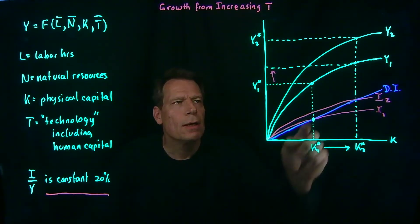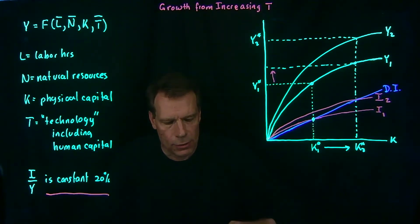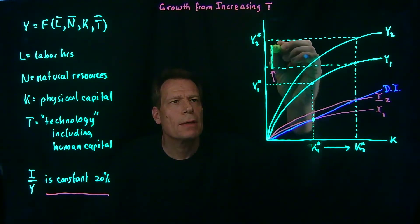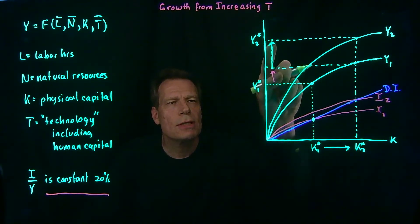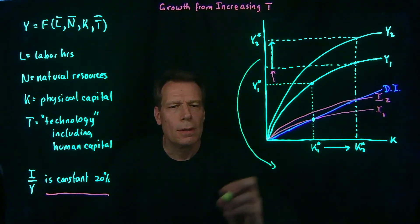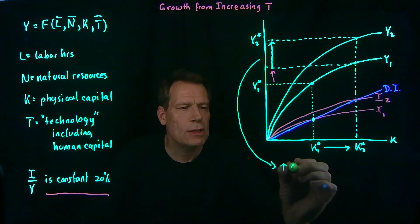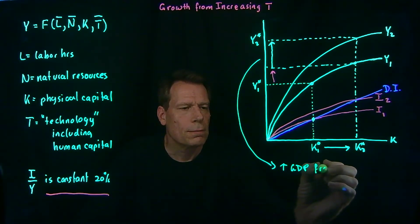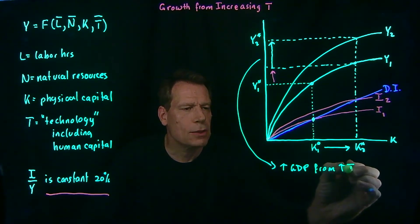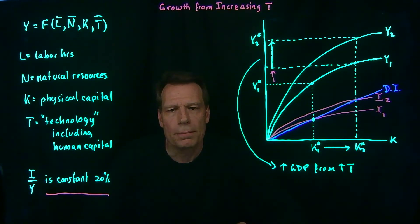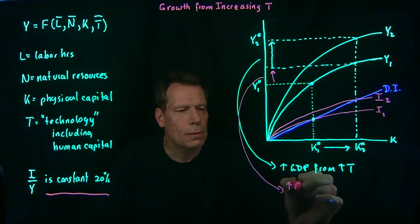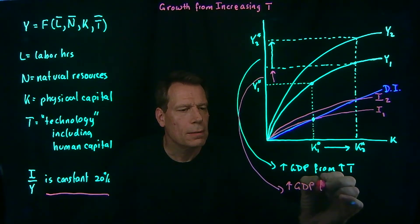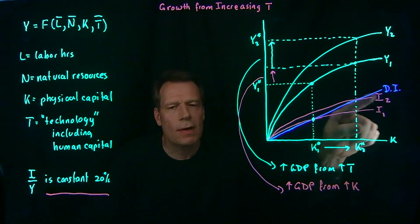But in addition, the technology changed the GDP curve. And so we see this additional increase that's happening just from that change in technology. So we can decompose the increase in GDP into two components. This component, which tells us the increase in GDP from the increase in technology at this new level of capital. But we also have this increase in GDP that's due to just the increase in capital that resulted from an upward rotation of the investment curve.